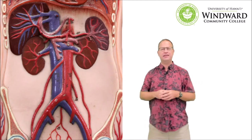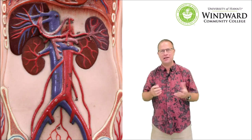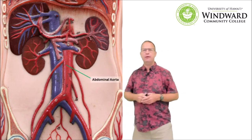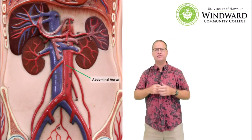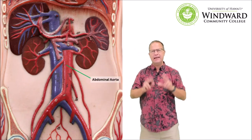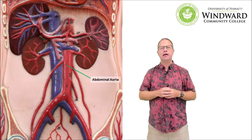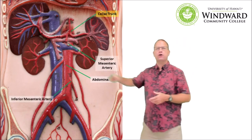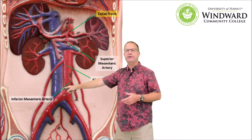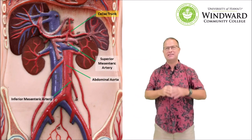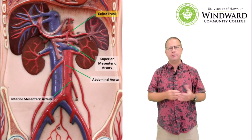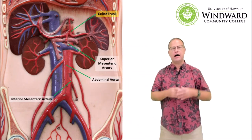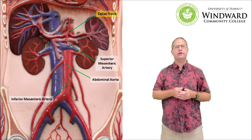Now we shift to the major blood vessels in the abdominal cavity — it looks like spaghetti, but we'll go through it systematically. The major vessel here is the abdominal aorta — once the descending aorta enters the abdomen, we call it the abdominal aorta. There are three singular, non-paired connections coming off it: the celiac trunk at the top, the superior mesenteric, and then the inferior mesenteric. The celiac trunk branches into vessels supplying the liver and stomach, while the superior and inferior mesenteric arteries supply the intestines with oxygen-rich blood.